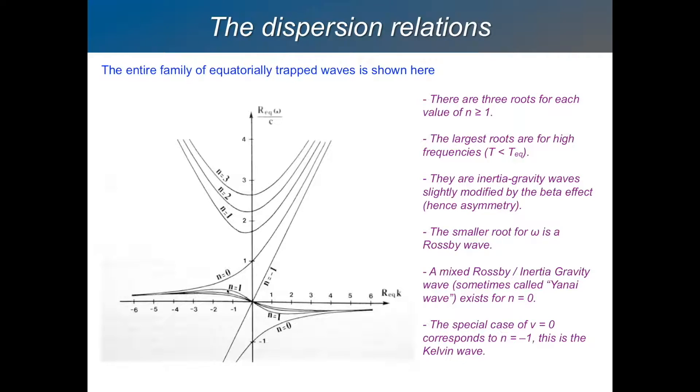Then in between, we have this strange hybrid solution, n equals 0, which is, well, when it's propagating towards the west, it behaves like a Rossby wave. And then when it's propagating towards the east, it goes to a higher frequency, and it behaves like a gravity wave. So what would you call that? It's called a mixed Rossby gravity wave, or sometimes called a Yanai wave.